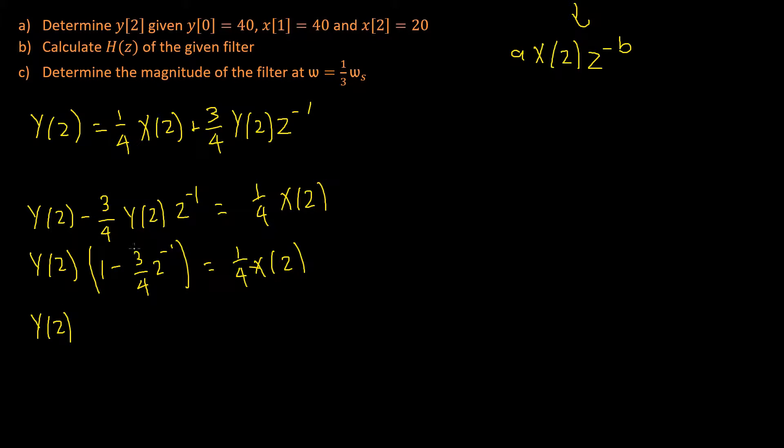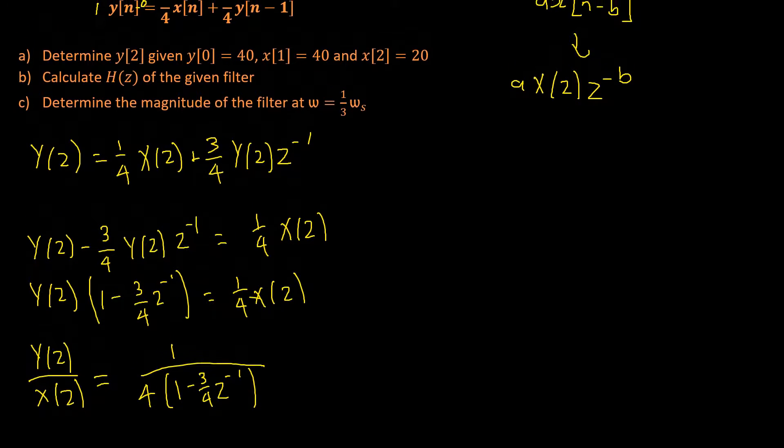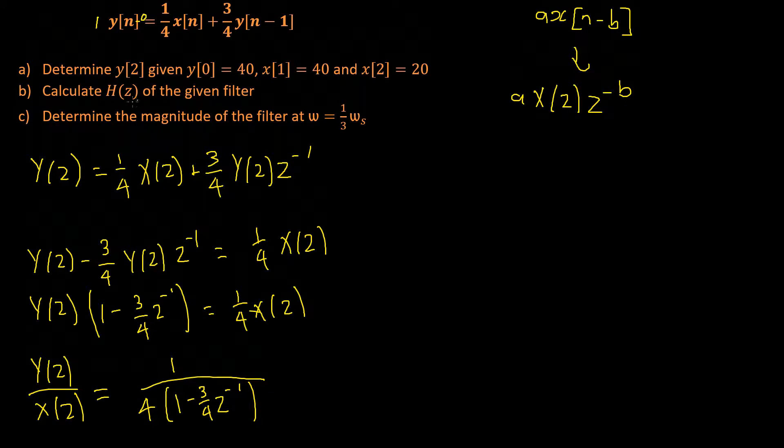Dividing through by 1 minus 3 quarters z to the power of negative 1 will cancel, and we'll be dividing by x of z as well. And then that will be equal to our original quarter, so let's do 1 divided by 4, and then that's also divided by 1 minus 3 quarters times z to the power of negative 1. So that will be 1 minus 3 quarters times z to the power of negative 1. Okay, so we have our h of z.